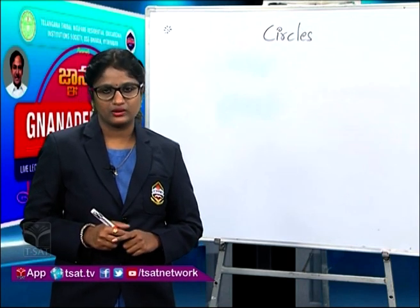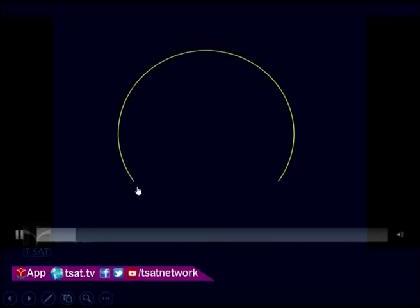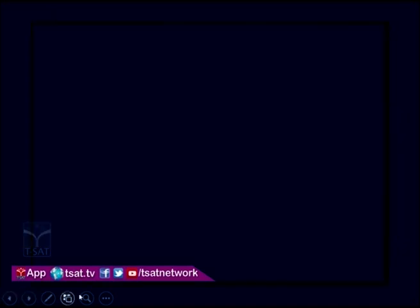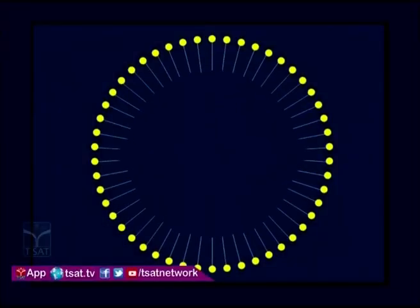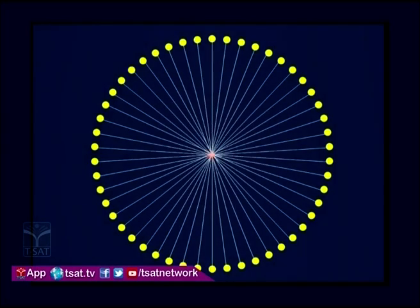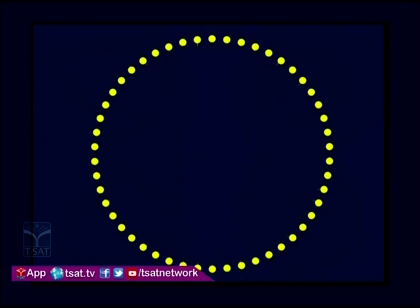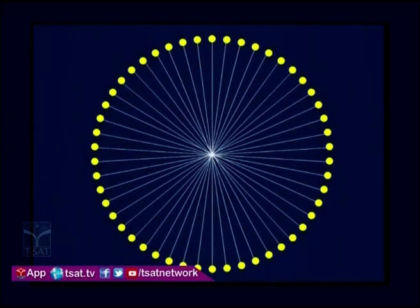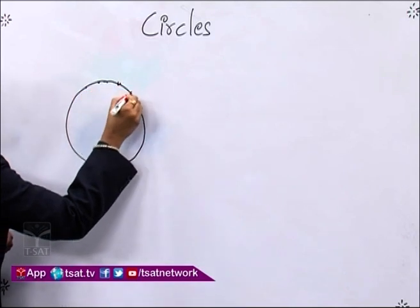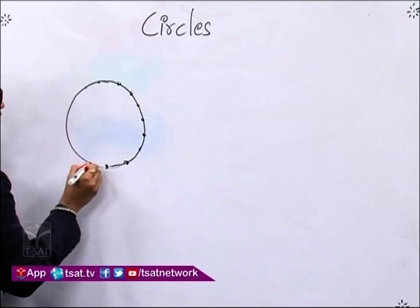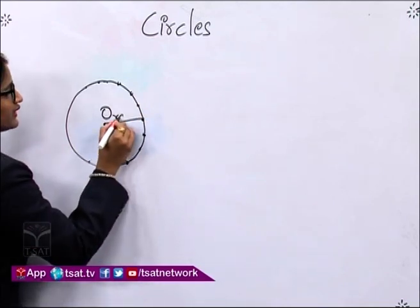There is no wonder if I say that circles rule our world. So, we will see the definition of a circle. A circle is a set of all points in a plane which are at a fixed distance from a fixed point. The fixed point is called the centre of the circle, and the distance we are talking about is called the radius of the circle.